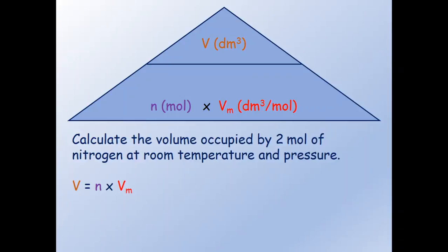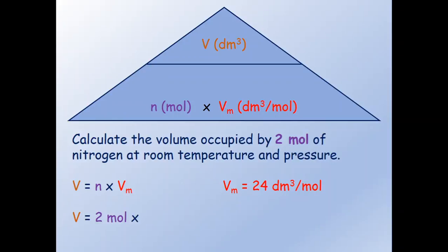The amount in mole is given in the question — it's two mole — and the molar volume, remember it's the same for any gas, so we have to remember it: it's 24 decimetre cube per mole. Now we just need to plug in those two numbers into our equation, so we get V equals 2 mole times 24 decimetre cube per mole, and that gives us a volume of nitrogen of 48 decimetre cube.